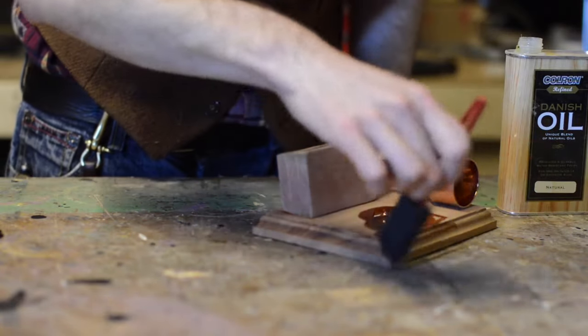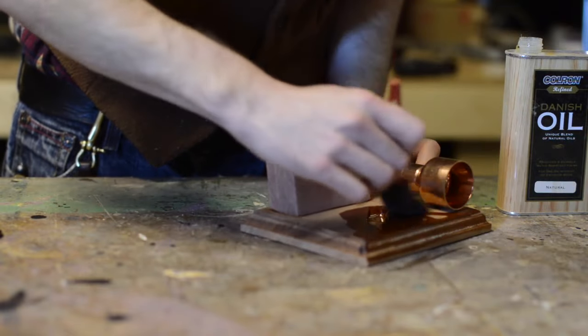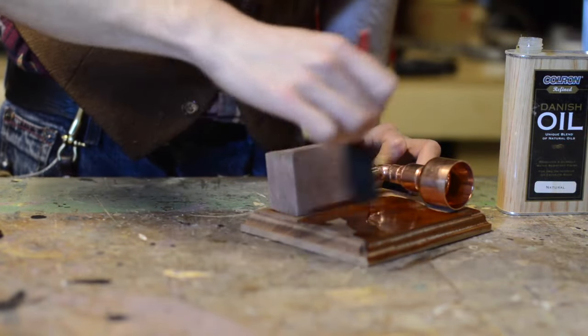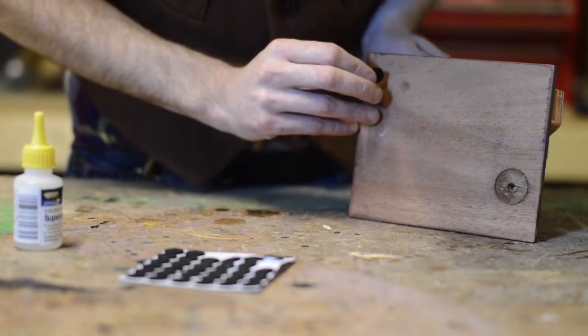When the epoxy is dry I give it all a coat of some Danish oil, really brings out the colour and will offer some protection. The final step is just to add a few little felt pads as feet.